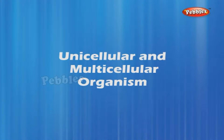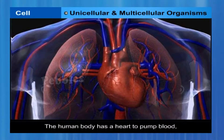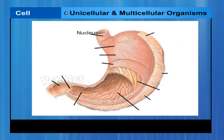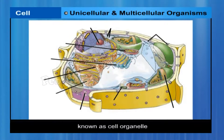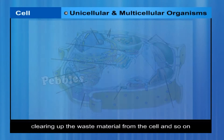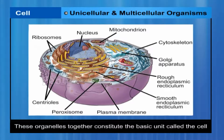The human body has a heart to pump blood, a stomach to digest food and so on. Similarly, division of labour is also seen within a single cell. Each cell has certain specific components within it known as cell organelles. Each kind of cell organelle performs a special function, such as making new material in the cell or clearing up waste material. A cell is able to live and perform all its functions because of these organelles, which together constitute the basic unit called the cell.